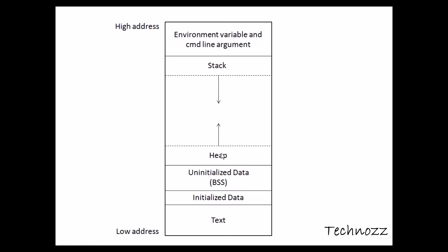Now we come to the heap. Whenever you are allocating dynamic memory — using malloc, calloc, or realloc — it will be allocated in the heap. You free this memory using the free function.